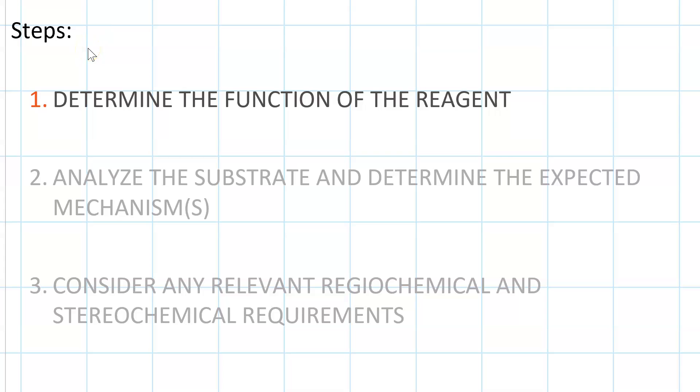There are three steps. The first is to determine the function of the reagent. Is it a nucleophile or a base or both? Is it strong or is it weak? Step two, analyze the substrate. Also consider solvent and temperature to determine the expected mechanisms. For instance, what is the degree of substitution in the substrate? Does the substrate have a good leaving group or a bad leaving group?